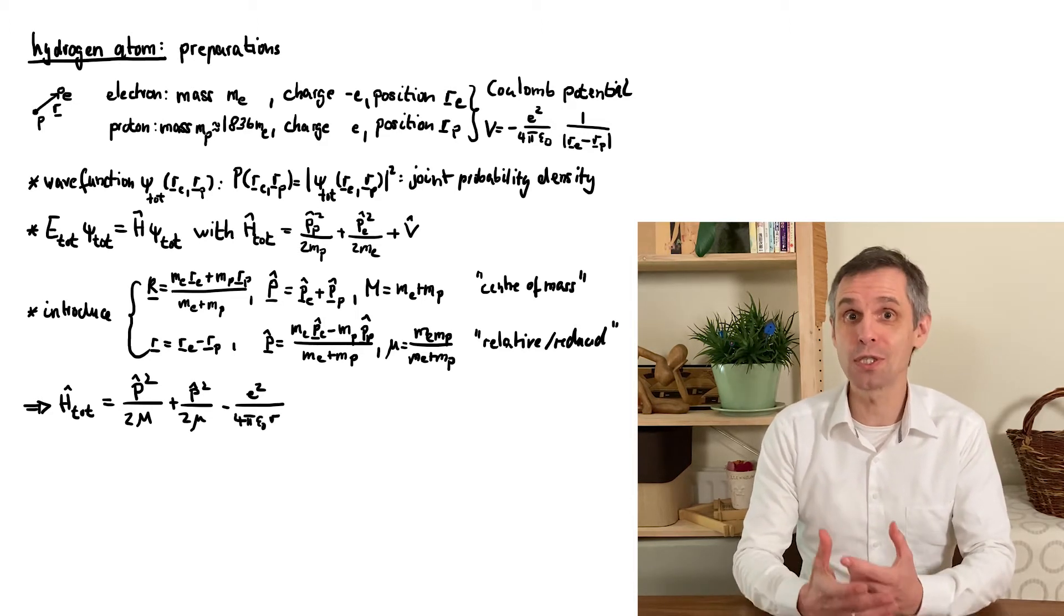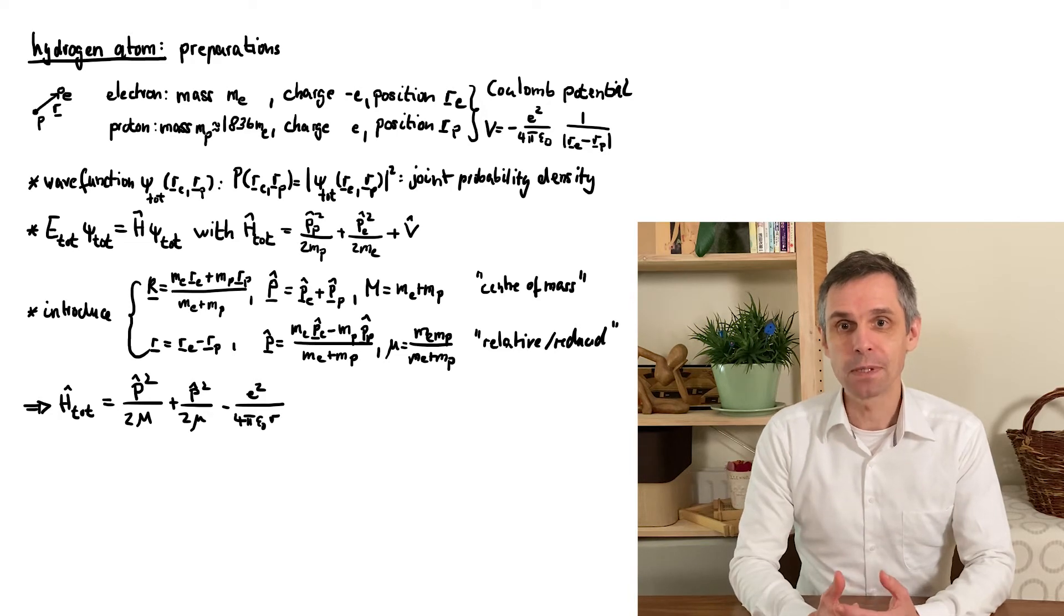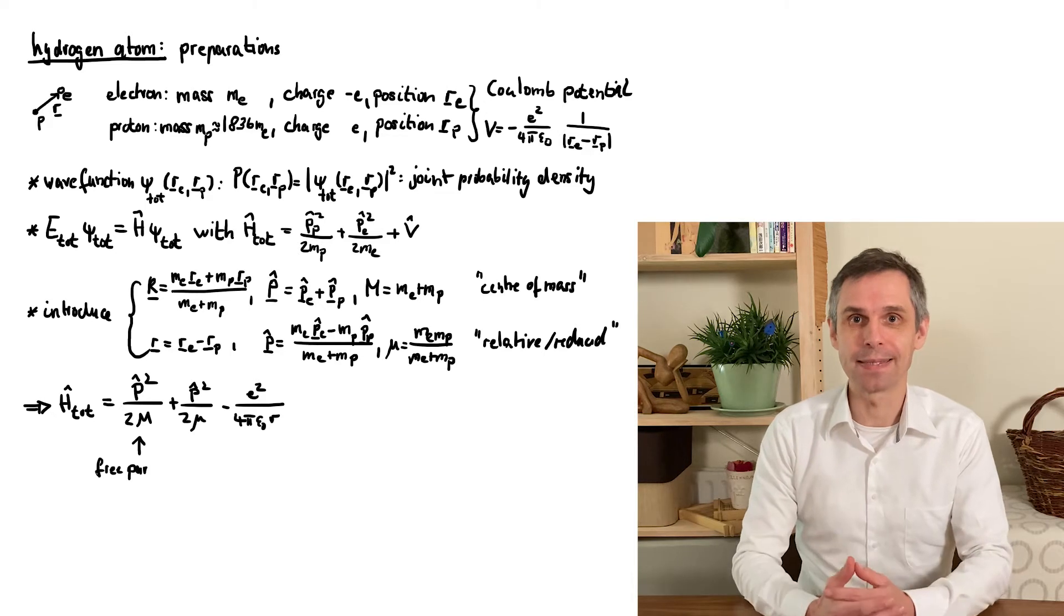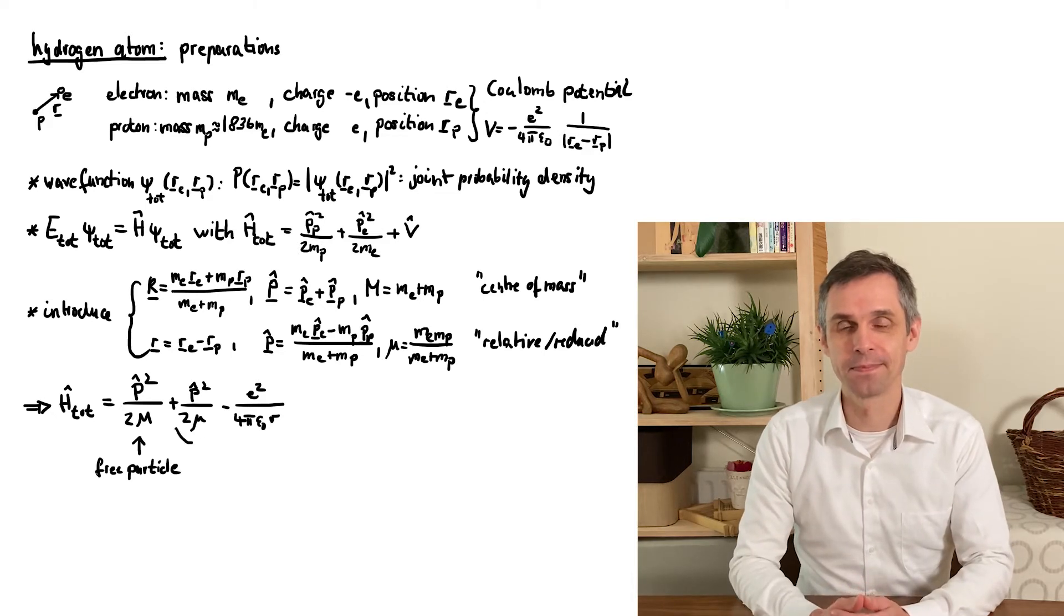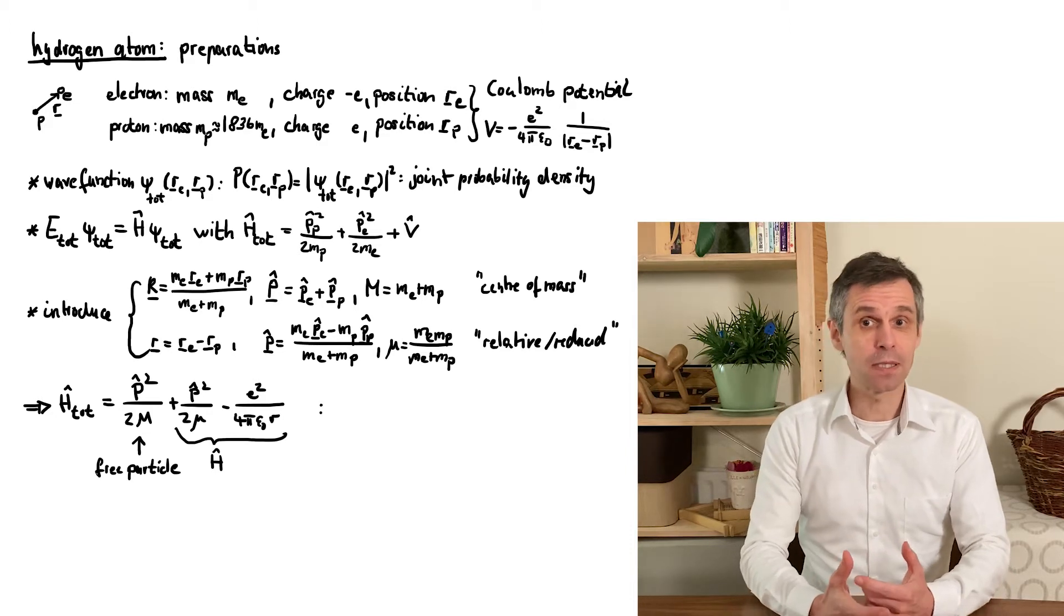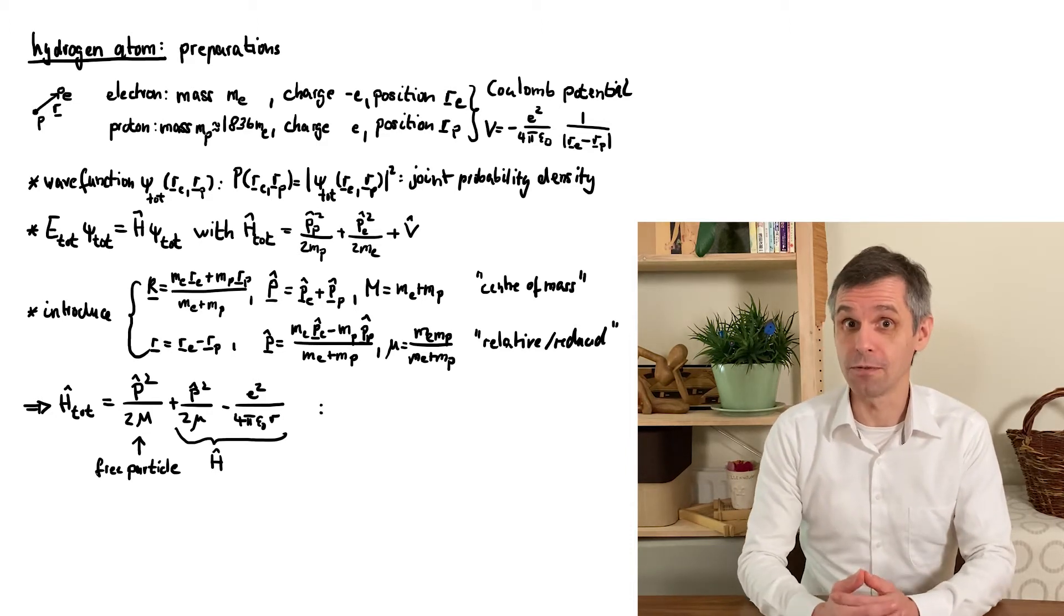And then we find that the Hamiltonian indeed becomes the sum of two independent parts. The first one describes the free motion of the center of mass.